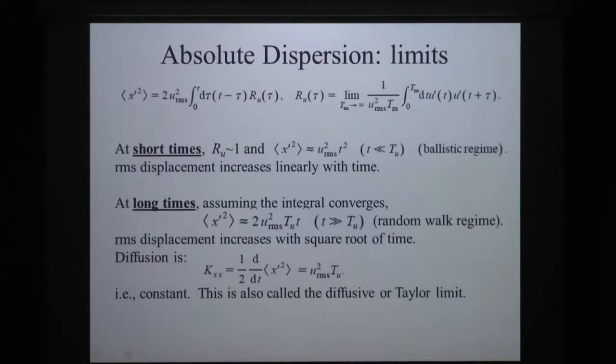There are some nice limits that Taylor showed us back in 1921. At short times, the autocorrelation function is one, it's correlated with itself as tau goes to zero, and what you find is x prime squared bar, the dispersion is just u prime squared times t squared. In other words, the displacement grows linearly with time, which makes perfect sense if you think about it. That's the ballistic regime, very short times. By very short, I mean time much smaller than the integral timescale. At very long times, assuming the integral converges, you find this relationship. It goes to two eddy speeds squared times the integral timescale times t. In other words, it now grows, this displacement grows with the square root of time, and that's a random walk. So this is called the random walk regime. When you look at the diffusion, the derivative with respect to time becomes a constant. The diffusivity becomes a constant, which is the Taylor limit or the diffusive limit. So that's what happens if you go many integral timescales out.